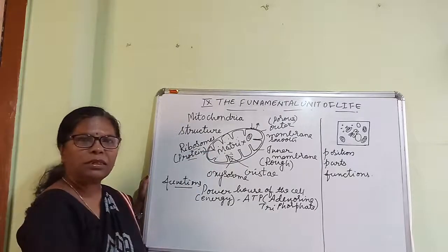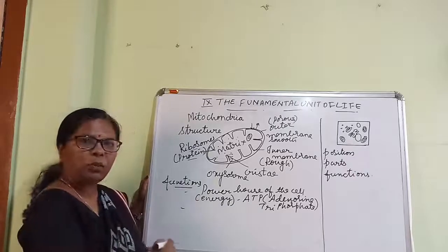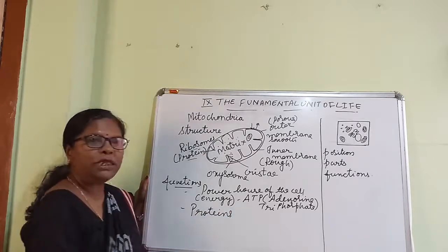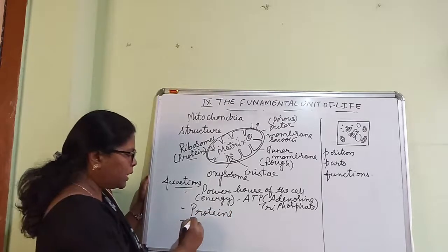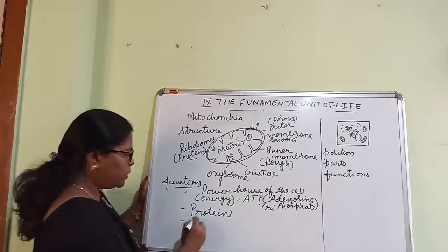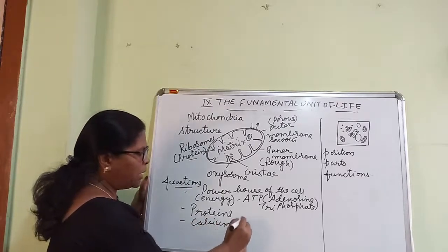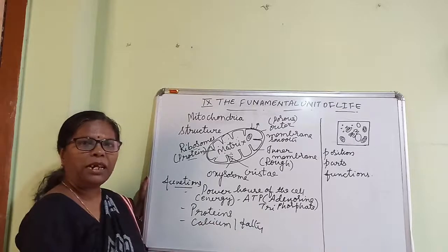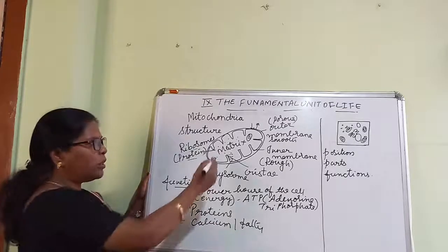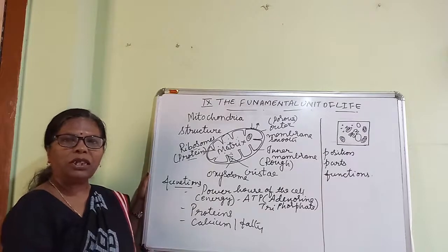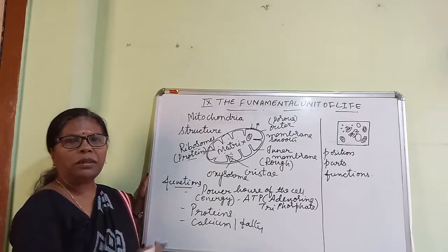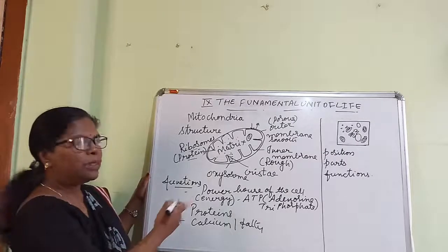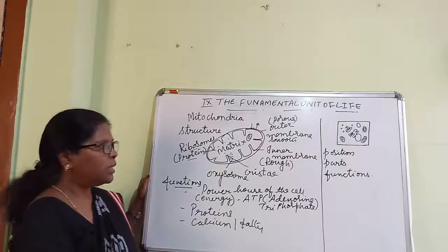Next, it also helps in the production and supply of protein molecules. Apart from protein materials, it will also take care of calcium and fatty acids. So to some extent, calcium and fatty acids are also supplied because of the mitochondria. So it is actually a supplier of very important materials to the cell for all cellular activities. That is why it is an important part of the cell.